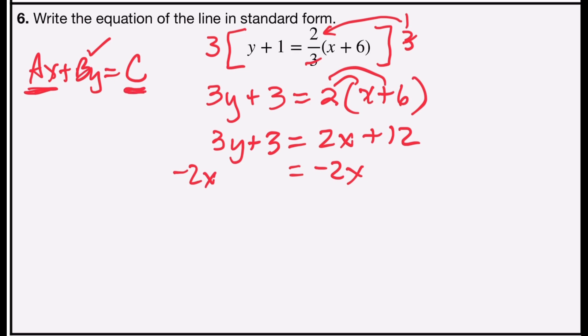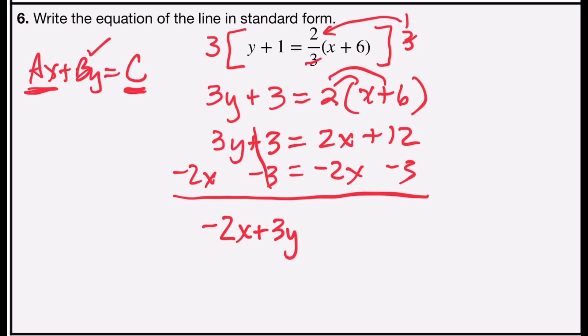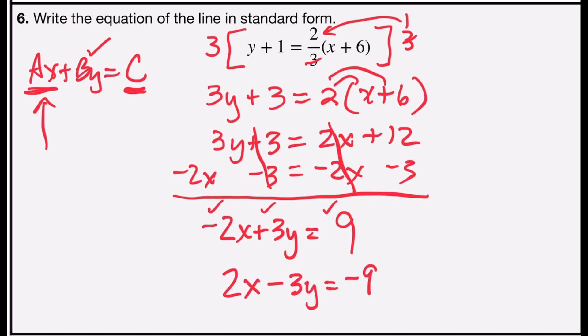3 minus 3 is 0, leaving negative 2x plus 3y on the left. 2x minus 2x is 0, and 0 plus 12 minus 3 is 9. I have all integers: negative 2, 3, and 9. However, my leading a term is negative, so I need to multiply both sides by negative 1 — all signs flip. In standard form, my equation is 2x minus 3y equals negative 9.